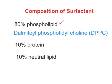10% of surfactant contains proteins — that is surfactant proteins A, B, C, and D. The remaining 10% of surfactant is composed of neutral lipids, and that is cholesterol. So 80% is phospholipid with dipalmitoyl phosphatidylcholine as the major component, 10% is protein, and 10% is neutral lipid.